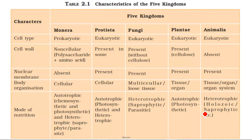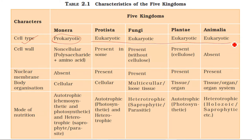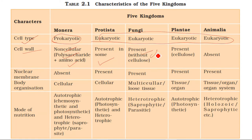Let's do a brief analysis using the NCERT table. The cell type of Monera is prokaryotic in nature, while Protista, Fungi, and Plantae are eukaryotic in nature. The cell wall of Monera is non-cellular and made of polysaccharides and amino acids. The cell wall of Fungi is made of chitin, so it cannot become cellulose.